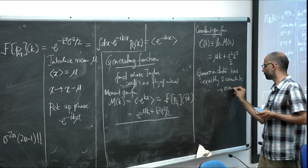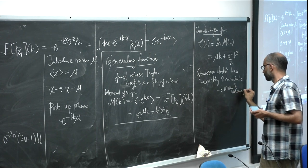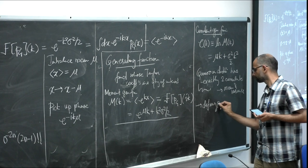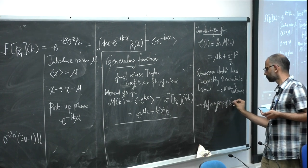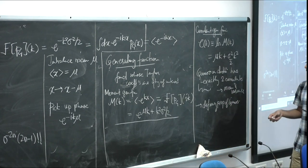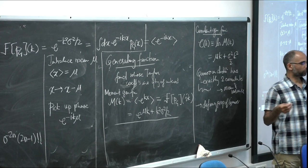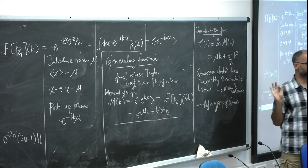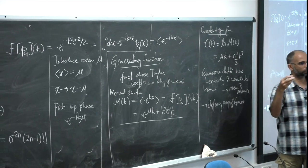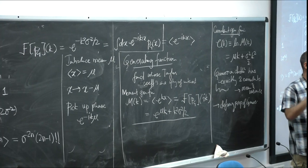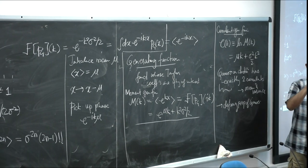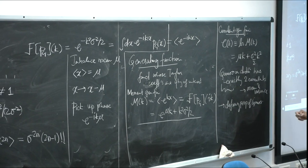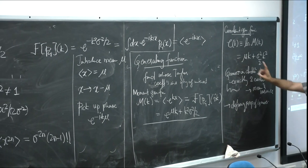A non-Gaussian distribution for this one variable is anything that has any higher-order cumulant. There is a theorem that says if a distribution has one higher-order cumulant beyond second order, it will have infinitely many — you cannot construct a distribution that stops at exactly three cumulants. This is a nice thing to remember as the definition of a Gaussian variable.